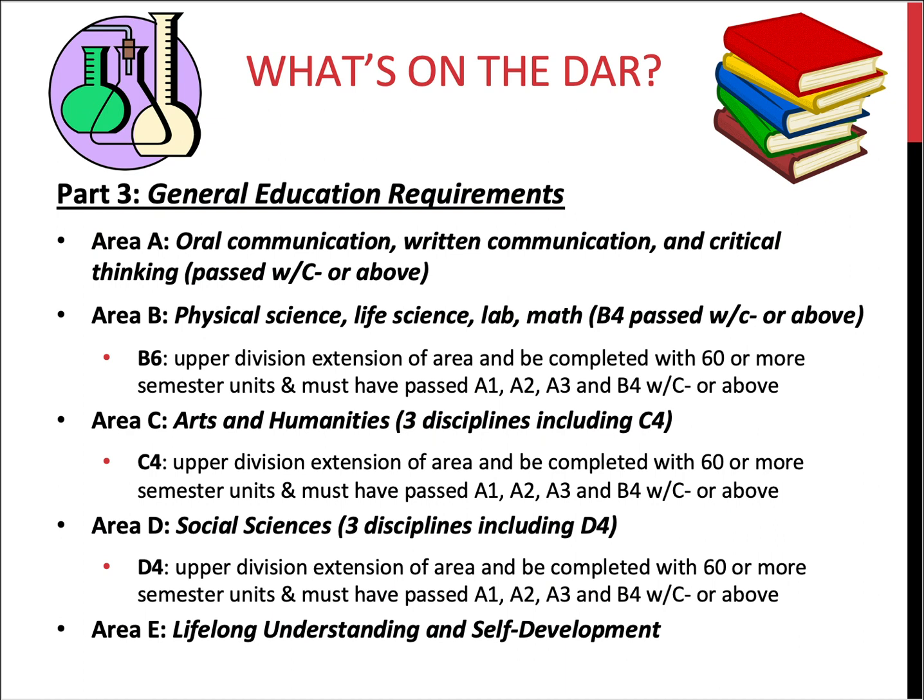Area B consists of physical science (B1), life science (B2), a lab (B3) which can be combined with B1 or B2, and a math course (B4). The math course must be passed with a C- or above. Area C consists of arts (C1) and humanities (C2), plus an additional C1 or C2 to complete three courses for the lower division portion of this area.